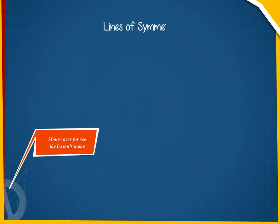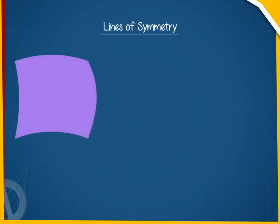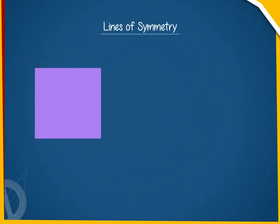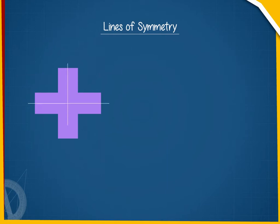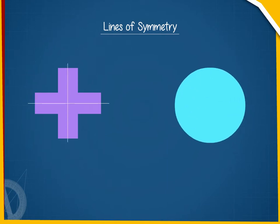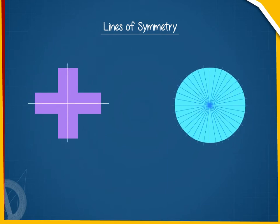A line of symmetry is a line which divides a symmetrical shape into two exact symmetrical halves. A symmetrical shape can have one or more lines of symmetry.